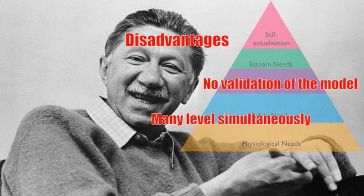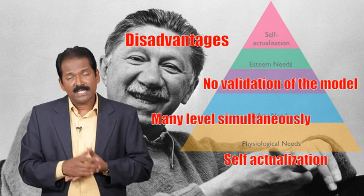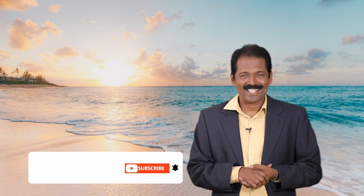The third demerit is his assumption that lower level needs must be satisfied before a person can achieve self-actualization. Many creative people such as authors and artists lived in poverty and throughout their lifetime still achieved their life goal — they got self-actualized. So this is the third disadvantage. If you are new to this channel, please subscribe and hit the bell icon.